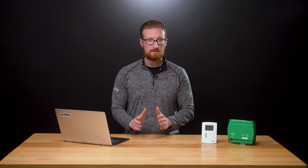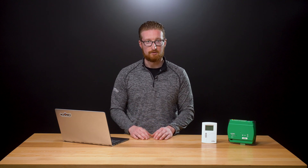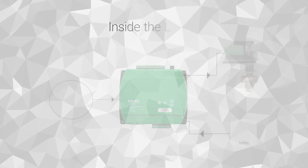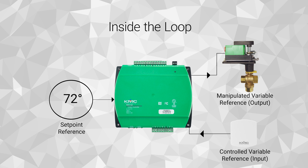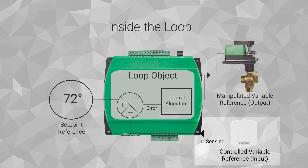Now that we know what pieces are involved in our control loop, let's break down the four-step process running inside the control loop. The loop maintains control of either a flow, pressure, or temperature by the following. First, by sensing a condition such as a zone temperature, air flow, or duct pressure by using the appropriate sensor for the process.